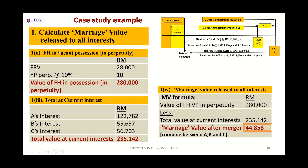Now we calculate the freehold interest on vacant possession basis in perpetuity — the market value of the property without any lease encumbrances. The full rental value is $28,000 capitalized at YP in perpetuity, giving a market value of approximately $280,000. Based on the previous calculations, the total combined current interests sum to $235,000 — being the sum of A's interest, B's interest, and C's interest.